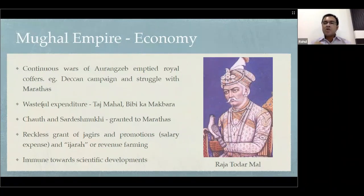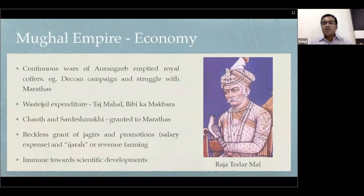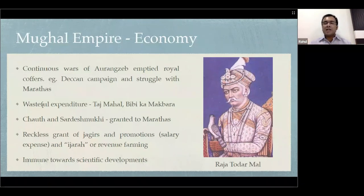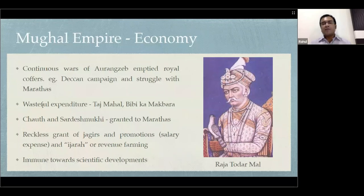When the rulers are weak, they start granting jagirs to their courtiers. If they are granting jagirs recklessly, it is going to empty the coffers again. Because of all these things, and because there were no new scientific developments to help increase production, the Mughal Empire's economy was constantly declining, which played a major role in the decline of the empire.